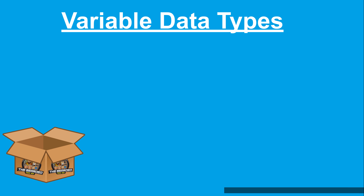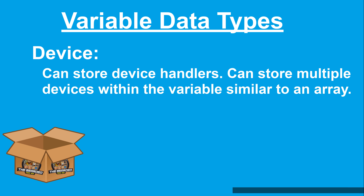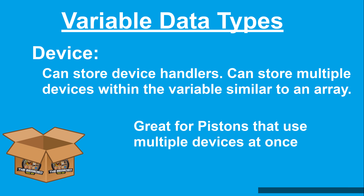The eighth variable data type is device. These variables can store device handlers such as a button. What's nice about this data type is that you can store multiple devices within the variable, similar to an array. This variable type is great if you want to interact with multiple devices without having to have multiple lines of code for each one.